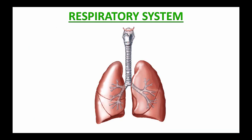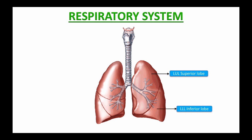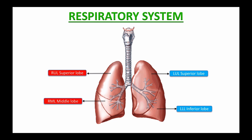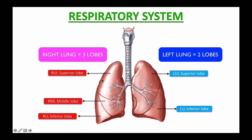Let's talk about the lungs. Your lungs are two spongy organs in your chest. The right and left lung anatomy are similar but asymmetrical. The left lung consists of two lobes: the left upper lobe (LUL), also called the superior lobe, and the left lower lobe (LLL), also called the inferior lobe. The right lung consists of three lobes: the right upper lobe (RUL), the right middle lobe (RML), and the right lower lobe (RLL), also called the inferior lobe. Remember: the left lung has two lobes and the right lung has three lobes.